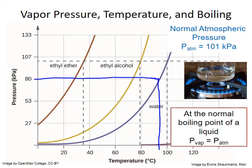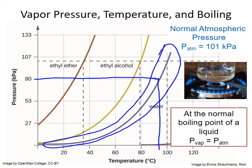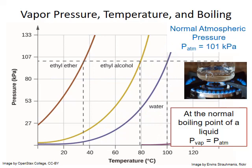We can actually calculate new boiling temperatures using the vapor pressure-temperature relationships for any liquid. The relationships described by these curves can also be quantified in the Clausius-Clapeyron equation, which will be the topic of the next presentation.